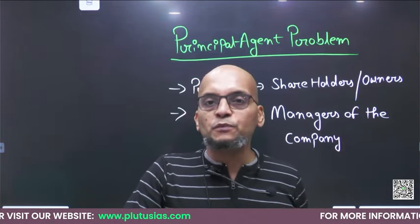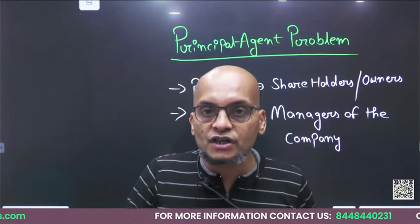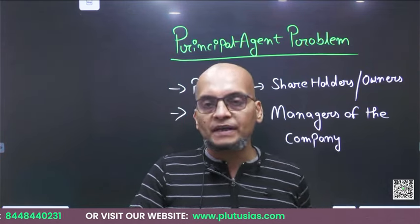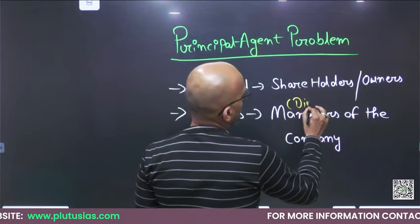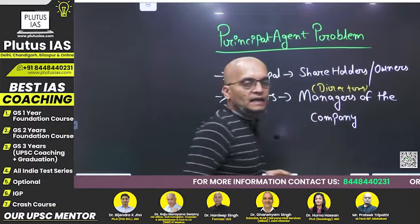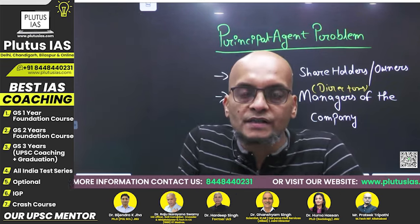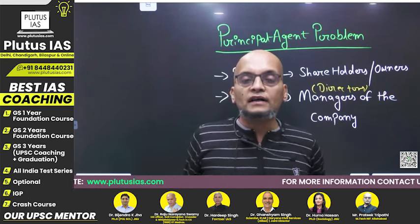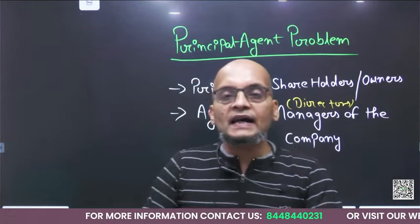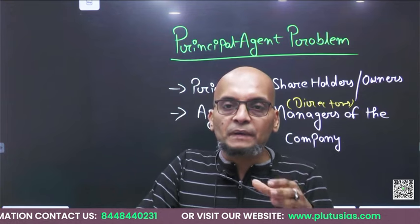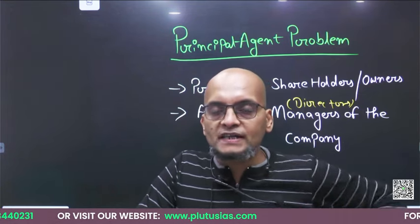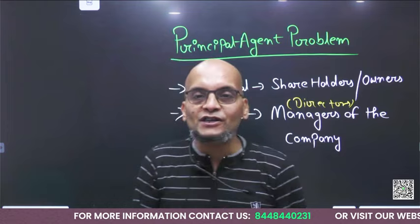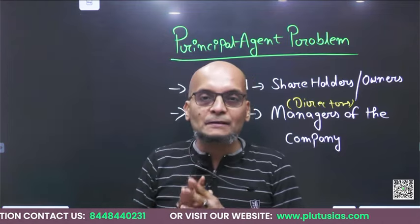Who is the agent? Agents are the managers who are hired by the principals or the owners of the company to run the company. Managers or directors — all these are the agents. They run the company on behalf of the owners or principals, and that's what they get paid for. The principal hires the manager, and the manager runs the company on behalf of the principal. Now, how does this problem arise? The principal has hired the manager to run the company on his behalf and is totally dependent on the manager.